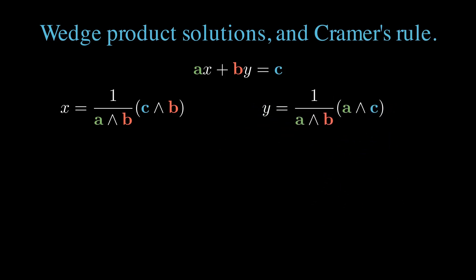When the system is an exact system, the bi-vectors a wedge b, c wedge b, and a wedge c will all be scalar multiples of each other. The result is a scalar.